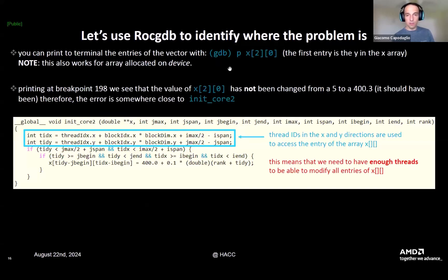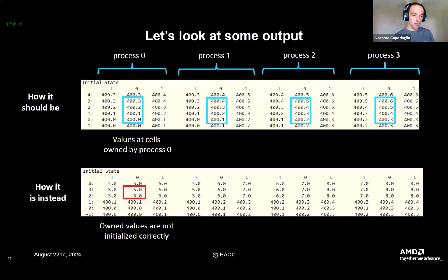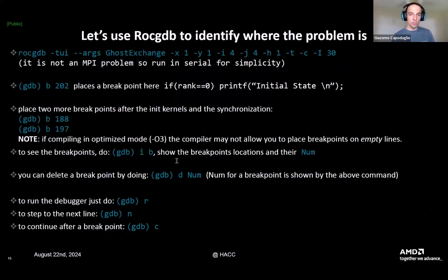Something interesting about ROCgdb is that it allows you to print the value of arrays that exist on device from the host. If you do P and then the array name, it will tell you the value. We can keep track of when the solution X does not change, because five is the value we initialize the solution to and then it needs to change to 400. That change doesn't happen here, so we want to track where it doesn't change when it should.